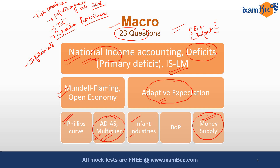Usually two or three questions might be there from current affairs, but this time there was actually no single question from this portion. Students who attempted the paper should not get disheartened, because the knowledge will be a plus point while answering in Phase 2. It will be very helpful for Phase 2. These are the few topics that were covered from the macro part.